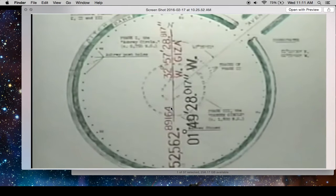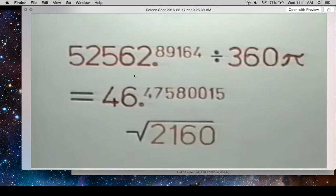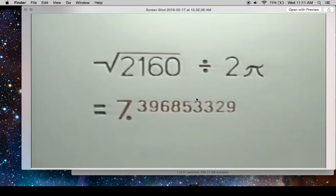So you take the feet across of Stonehenge, multiply it by pi, and then 15, because there's 15 inner stones, and then divide that by the square root of 15, like we saw earlier, to get the exact grid longitude of Giza. 52,562. In other words, 01 times 49 times 28.017. It's telling us why it is where it is by the structure itself. And if we take the grid longitude of Stonehenge divided by 360 pi, we get the square root of 2160 again. These numbers keep showing up, and it's not a coincidence.